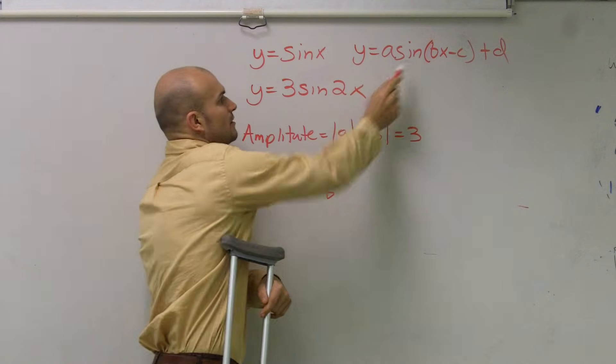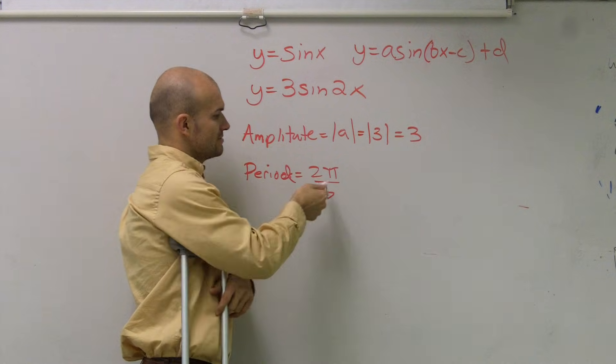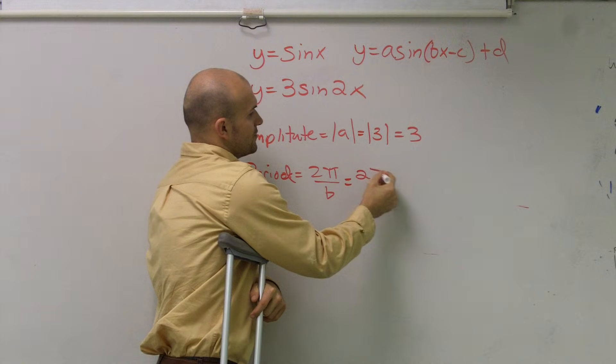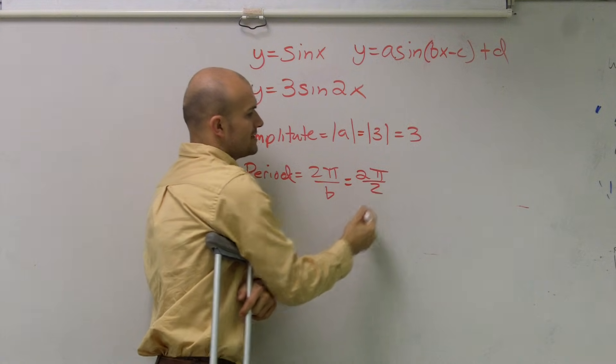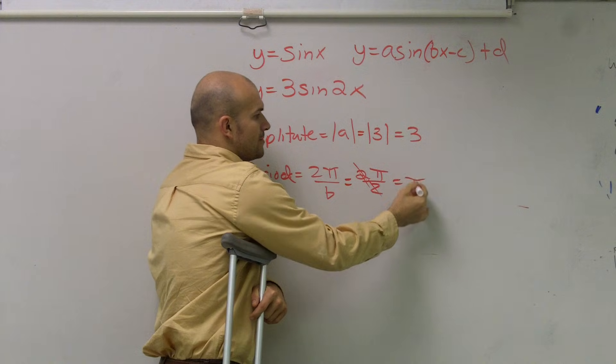Well, then I go and look at, all right, what is my number in front of x? You say, well, it's 2. So I say my B is 2. So I have 2 pi divided by 2. Well, now my 2s will cancel out, and I'm left with pi.